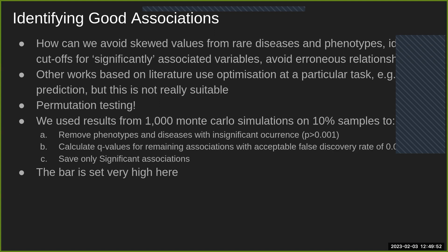The key challenge is identifying good quality associations and avoiding skewed or erroneous values. Some biomedical resources address this using optimization on classification tasks with gold standards — choosing a cutoff that maximizes performance on a training set. The problem is that this overfits: recent results show this approach isn't good for finding new information, because we select subsets useful for recapitulating what we already know rather than finding novel associations.